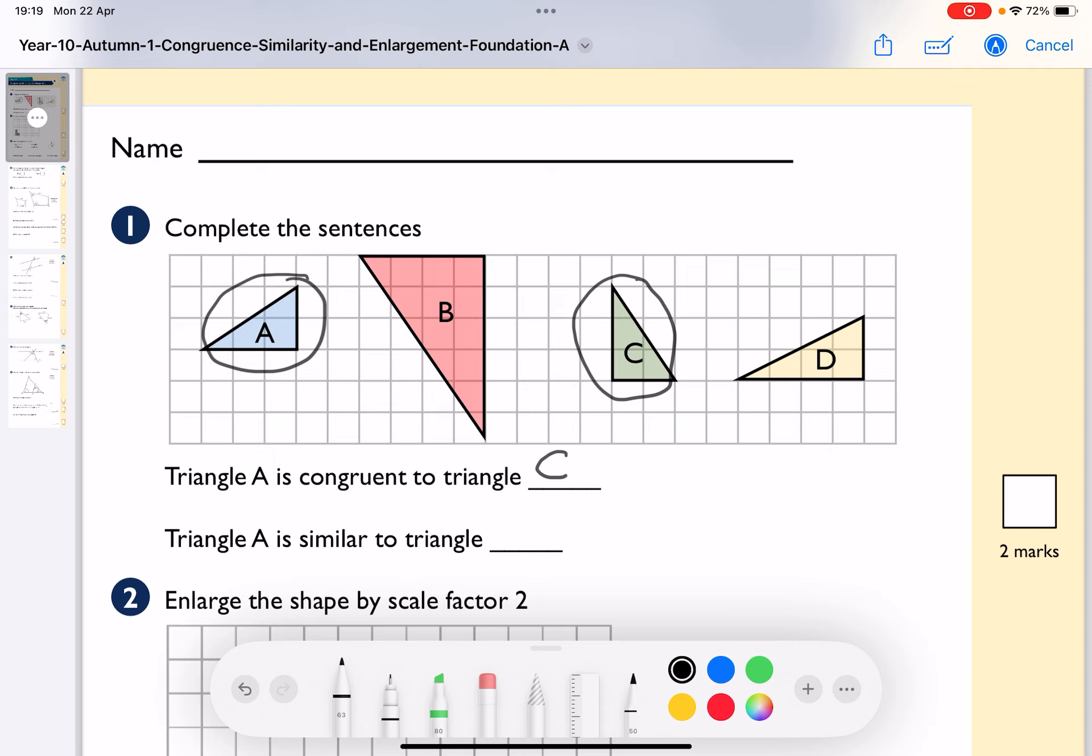Now triangle A is similar to triangle something else. Similarity involves some form of scale factor. So when I'm looking at this, if I look at A, I look at its dimensions, so how big it is, and it is two high by three.